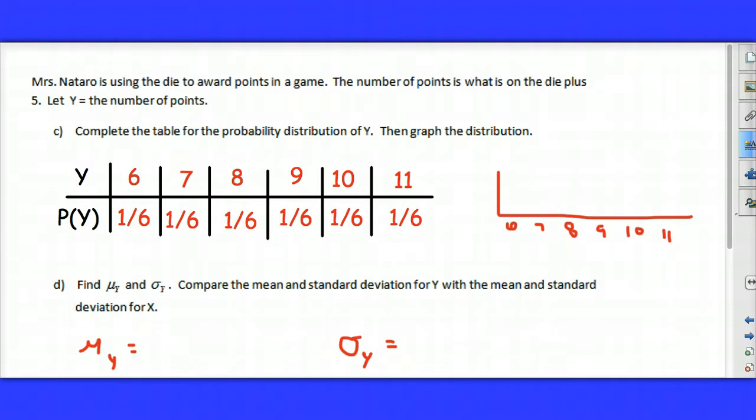And so when I graph this particular distribution once again, I'd have a uniform distribution with each value occurring 1/6 of the time. So the shape of my distribution didn't change. What about my mean and standard deviation? Well, let's go to the calculator to help us figure that out.